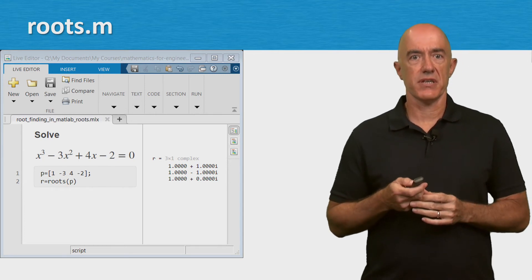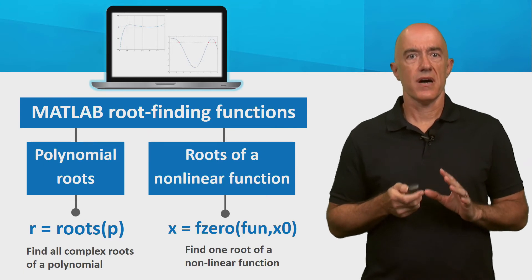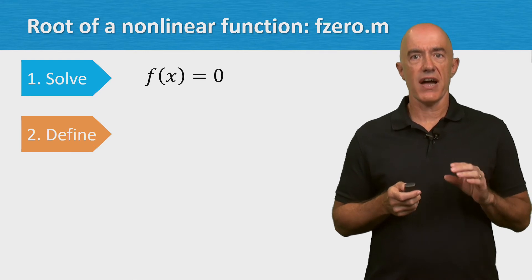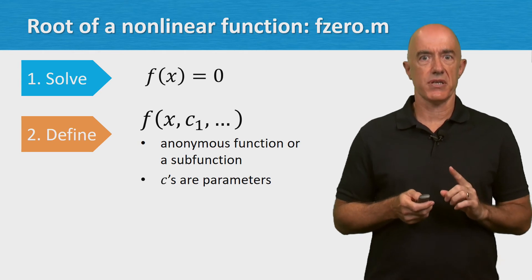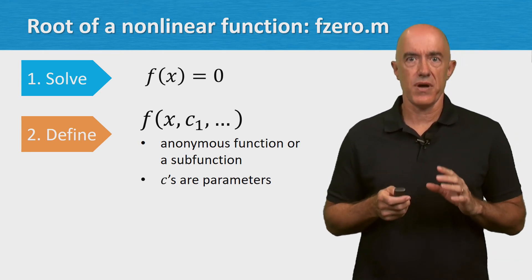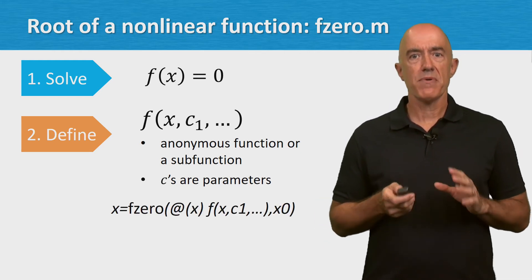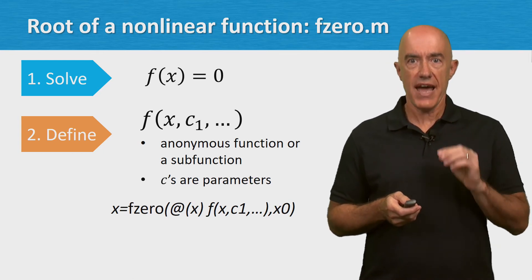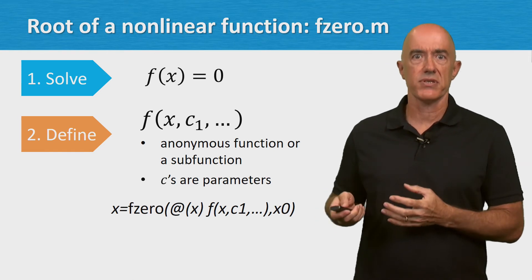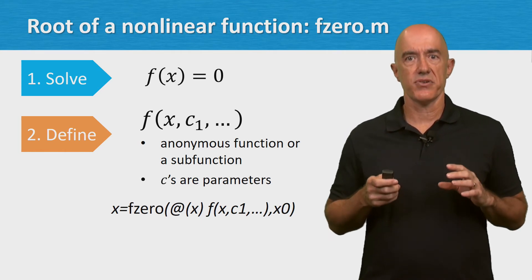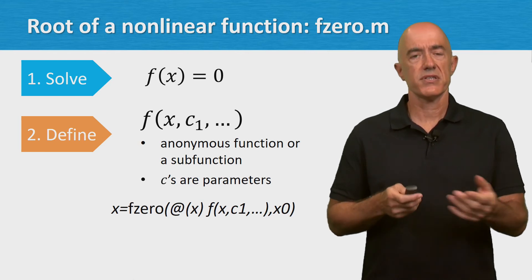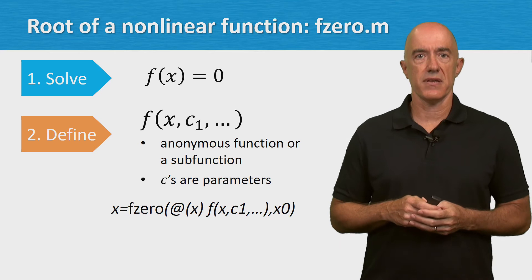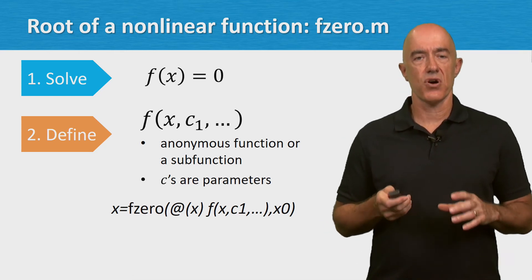Now let's look at the fzero function. fzero can find one root of a nonlinear function. We need to define f as either an anonymous function or a sub-function. Most problems will have parameters in addition to x, so we need to include them also. We give fzero an initial guess for the root in the variable x0, just like in Newton's method, or a bracket for the root when x0 is a length-2 vector, just like in the bisection method. In most applications, it's more common to give a value of x0 close to the root.